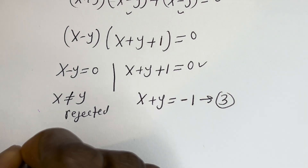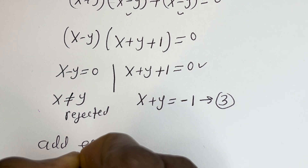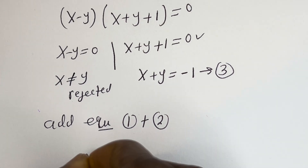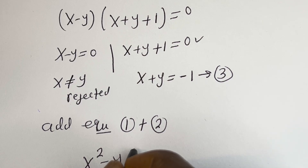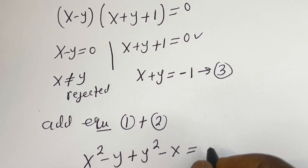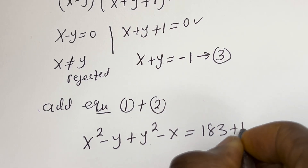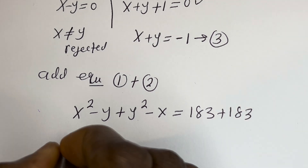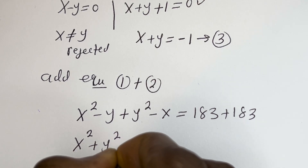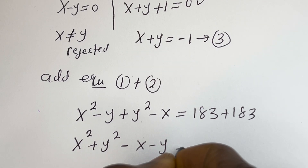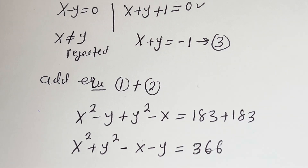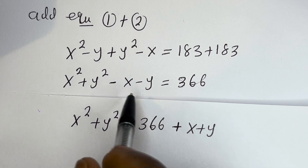Also, let's add equation 1 and equation 2. That is: s squared minus y plus y squared minus s is equal to 183 plus 183. Then we have s squared plus y squared minus s minus y is equal to 366.